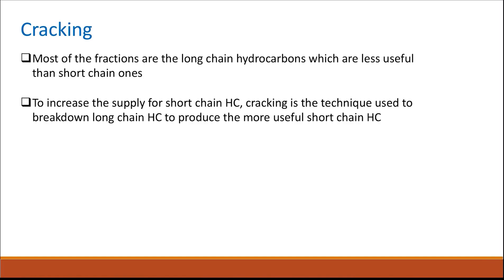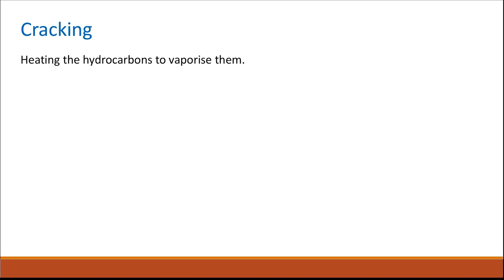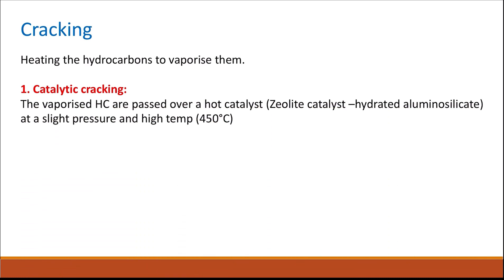Cracking is the process used to break down longer-chain hydrocarbons into shorter, more useful ones. First, the long-chain hydrocarbons are heated and vaporized. There are two types of cracking. The first is catalytic cracking, in which vaporized hydrocarbons are passed over a hot catalyst called a zeolite catalyst, or hydrated aluminosilicate, at a slight pressure and high temperature of around 450°C.